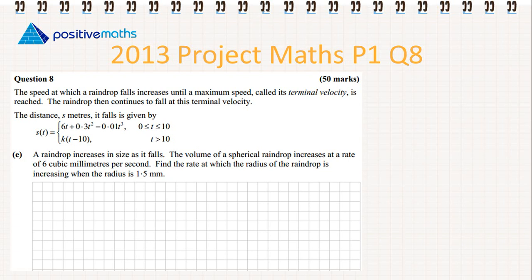Part e: A raindrop increases in size as it falls. The volume of a spherical raindrop increases at a rate of 6 cubic millimeters per second. Find the rate at which the radius of the raindrop is increasing when the radius is 1.5 millimeters. We are looking for the rate of change of the radius, which is dr/dt, when the radius equals 1.5 mm.